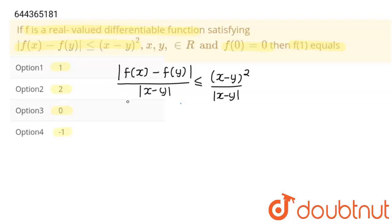Now, I am going to write this as |[f(x) - f(y)]/(x - y)| is less than or equal to